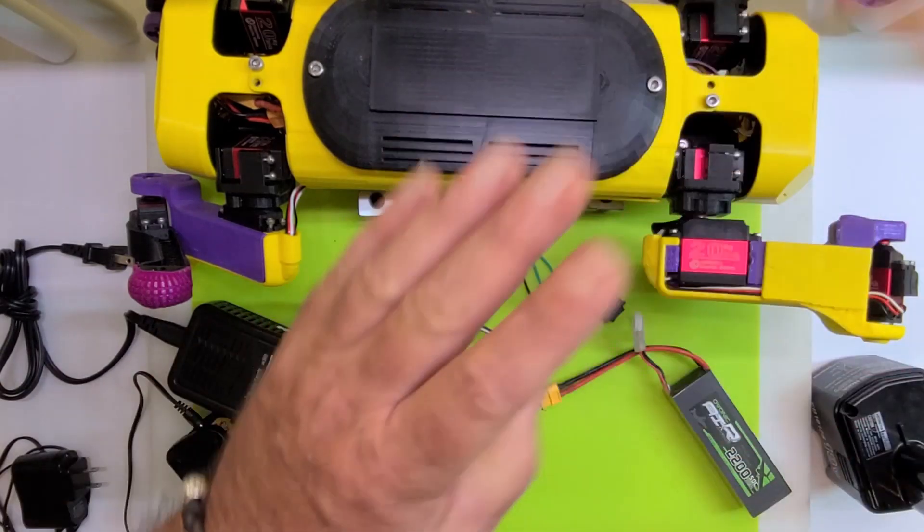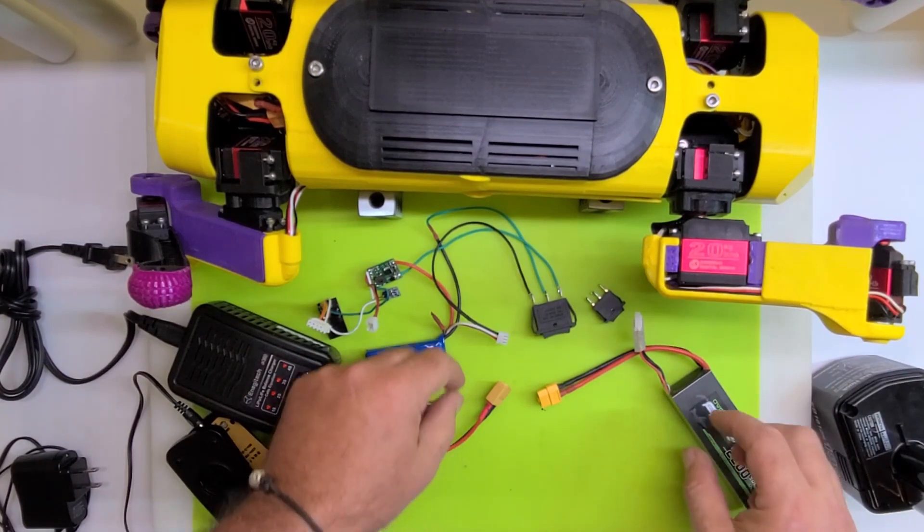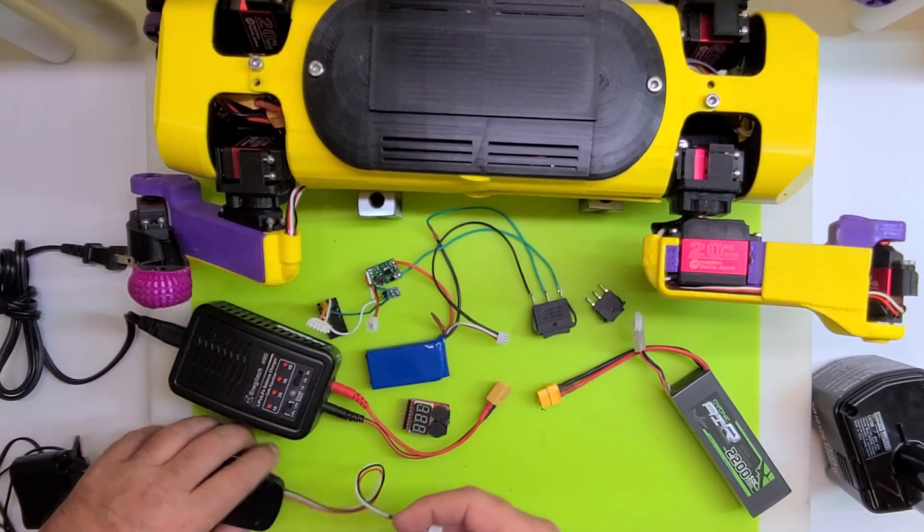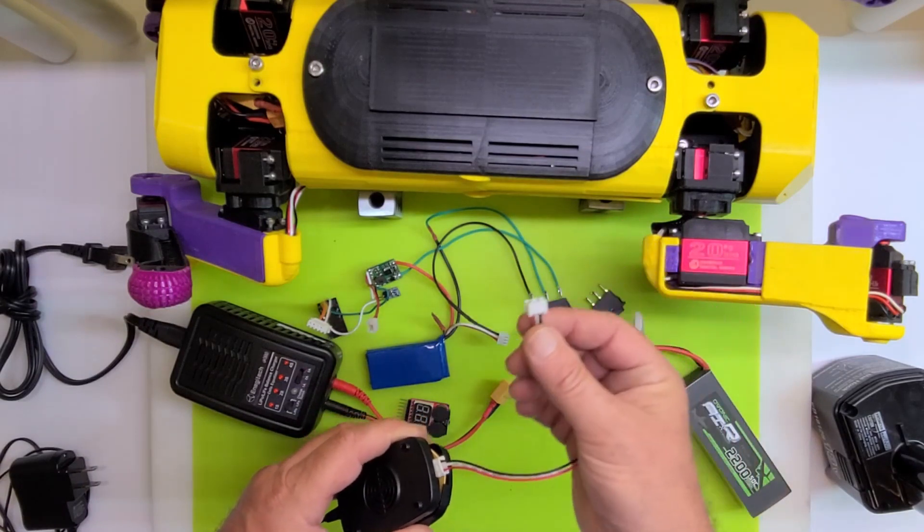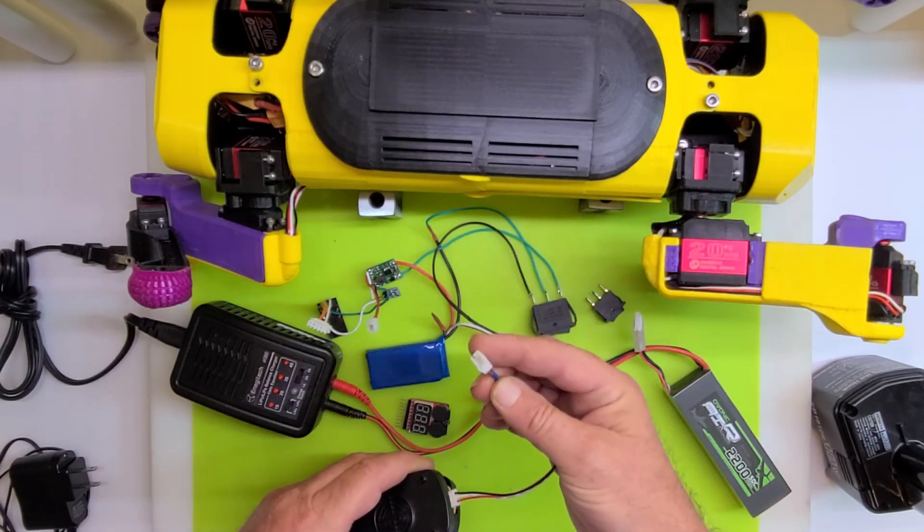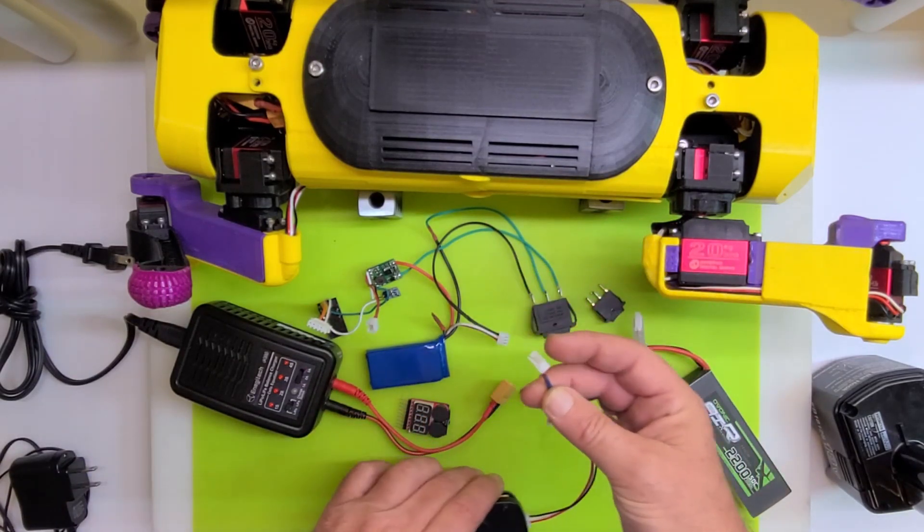Doesn't give us any charging, no overcharge, no reverse current detection, none of that fun stuff that a BMS would give us. But it does give us this exposed JST in the back of our remote, right there is where it will go so you will not have to open the remote control.